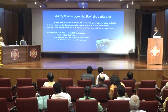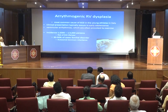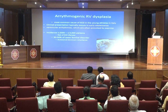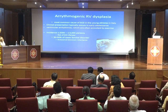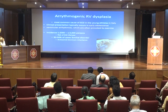Arrhythmogenic RV dysplasia is rare in this area but is the most common cause of sudden cardiac death in young athletes in Italy. It typically occurs in early adolescence with ventricular arrhythmias usually provoked by exercise. The incidence is 1 in 2000, and the risk of sudden cardiac death is 2% per year.